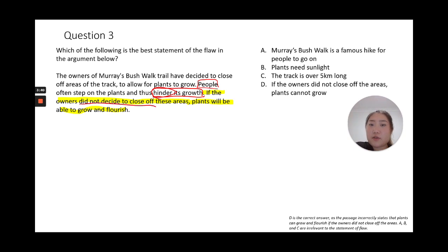Then the highlighted bit says if they did not decide to close it off, suddenly the plants will grow and flourish, which is a direct contradiction - a direct opposite to what they stated before. So the answer is actually D: if the owners did not close off the areas, their plants will not grow and flourish.